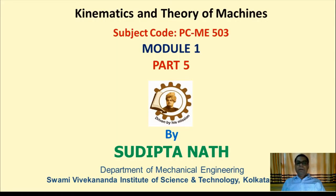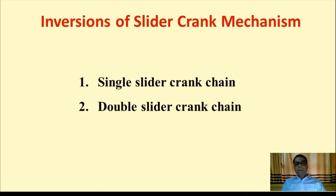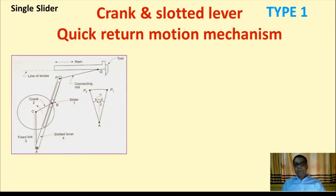Hello students, welcome and my best wishes to all of you for this class of Module 1, Art 5 of Kinematics and Theory of Machines. In inversions of slider crank mechanism, we see single slider crank chain and double slider crank chain. In single slider crank chain, Type 1 is the Crank and Slotted Lever Quick Return Motion Mechanism, which we are going to observe here.